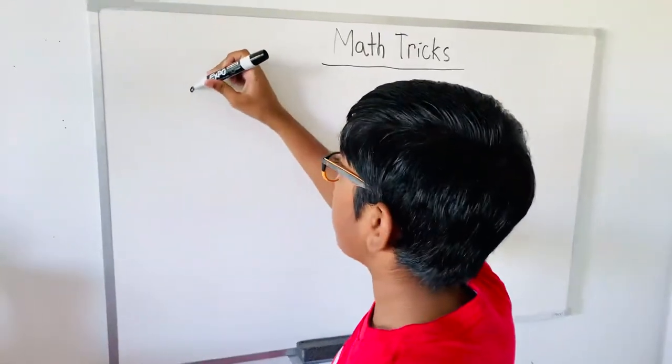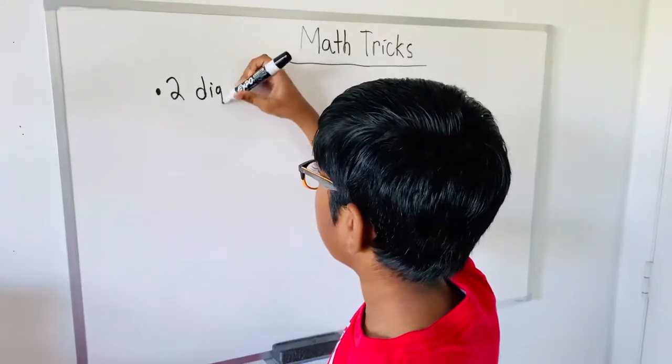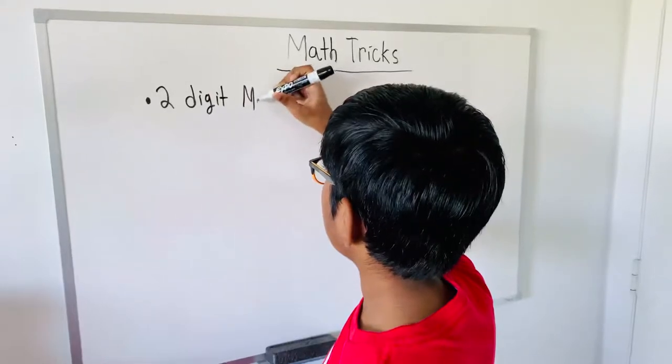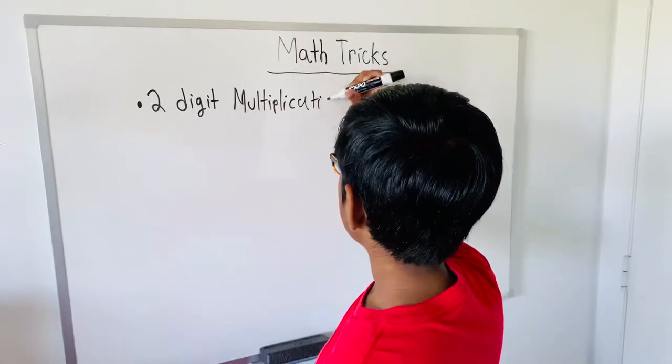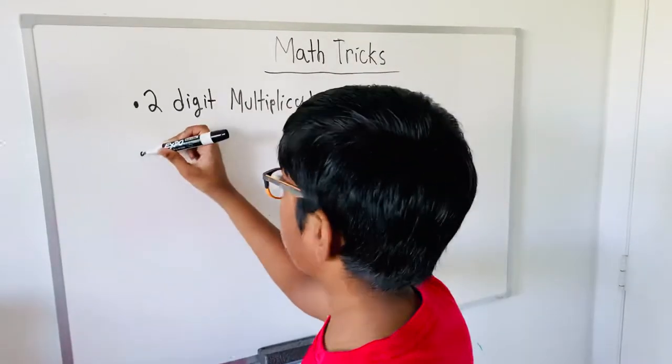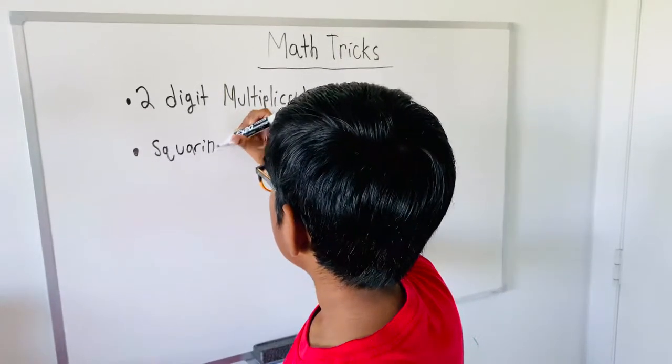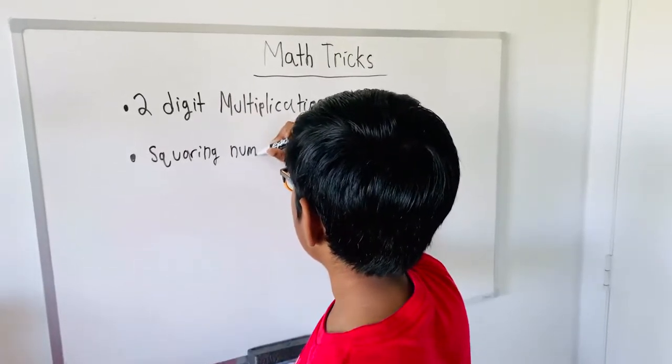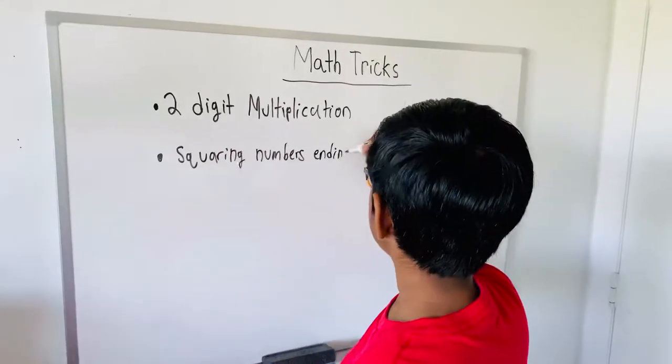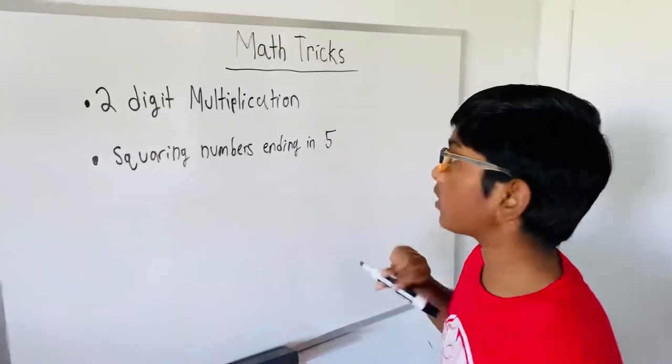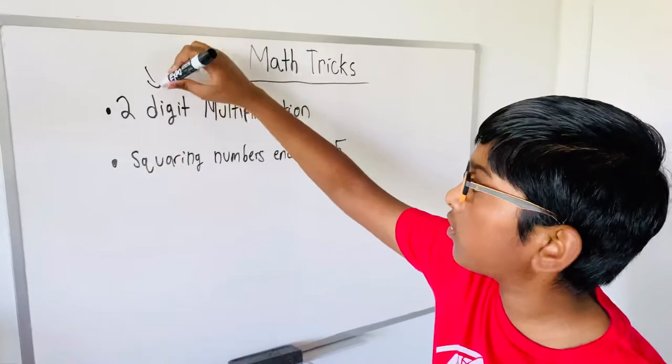The first trick we're going to be doing is two-digit multiplication. And the other one is squaring numbers ending in five. So we're going to be doing these topics today. Let's first do this, then we'll do this.